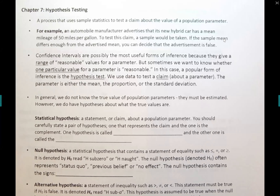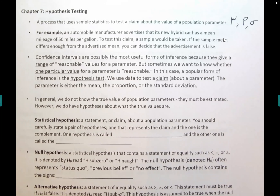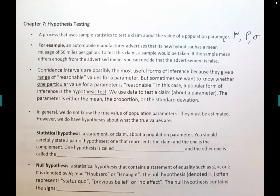What is a hypothesis test? It's a process that uses information from a sample to test a claim about the population parameter. The three population parameters we will be testing in chapter seven are: testing the mean, testing the population proportion as you did in chapter six, and testing the population standard deviation. In reality, we don't know what the population mean is.